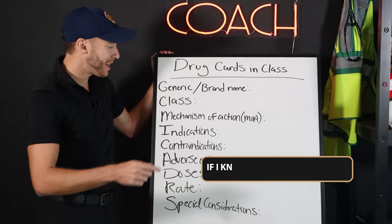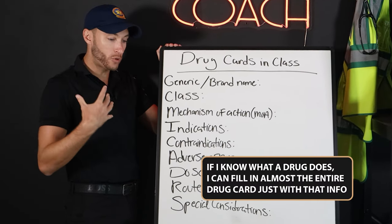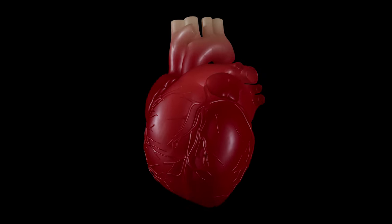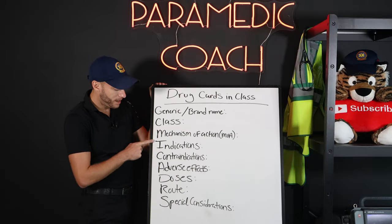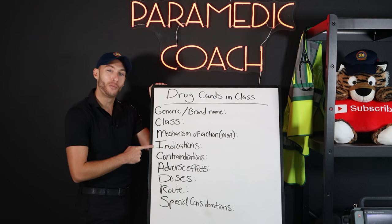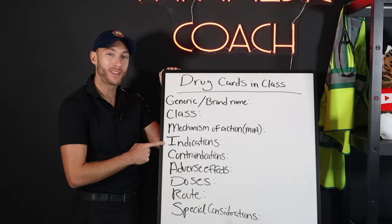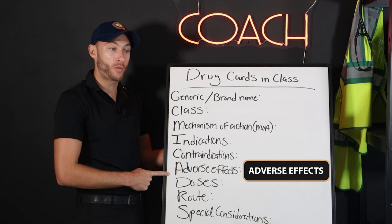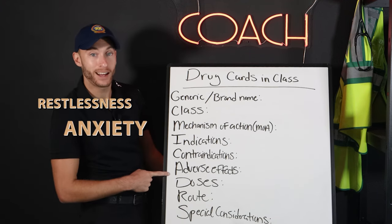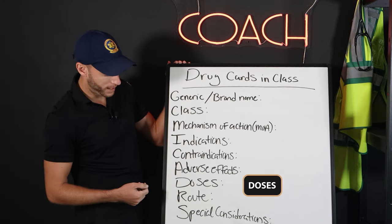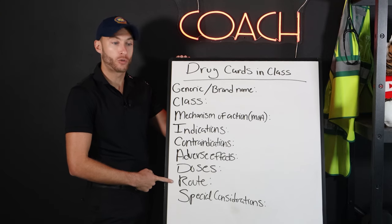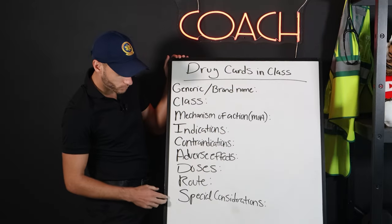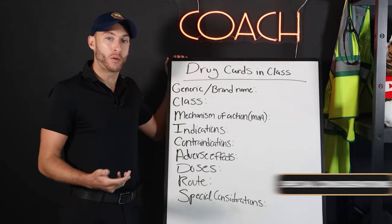If I know what a drug does and I understand the mechanism of action and how it translates to what goes on in the body, I can fill out this whole drug card — indications and contraindications. For example, if I know a drug is going to increase someone's heart rate, if the indication is when I give it, and their heart rate's too low, I might want to give it. Adverse effects: raising heart rate might cause restlessness, anxiety, or palpitations. Dose is determined by the drug. Route — is it IV, IO, PO, oral, intramuscular? Every drug also has special considerations you want to think about when giving it.